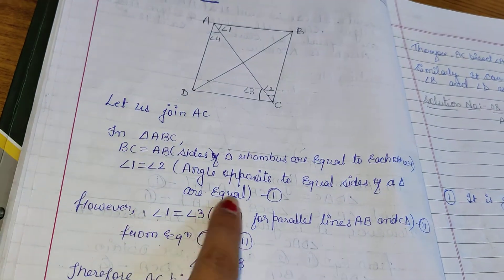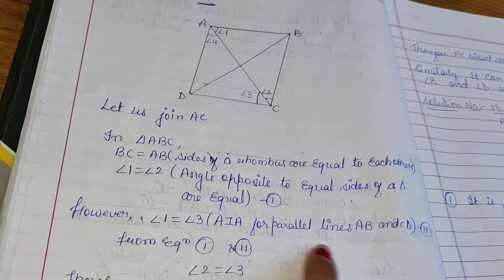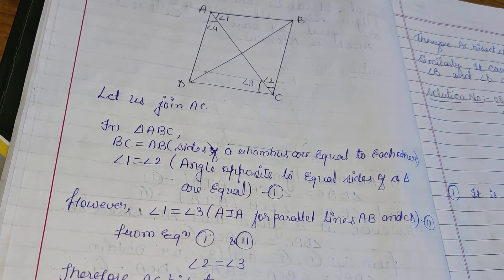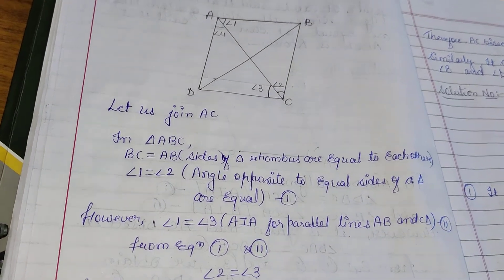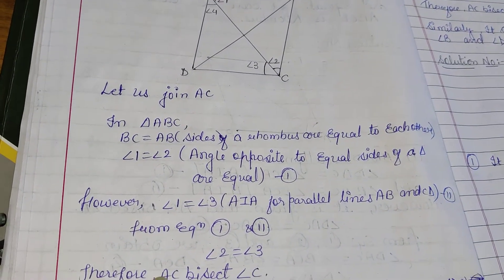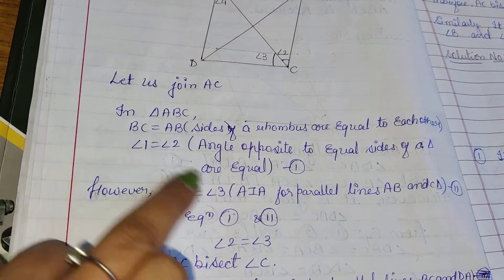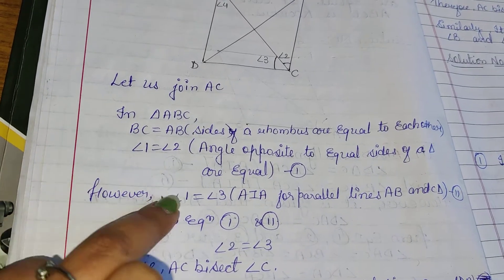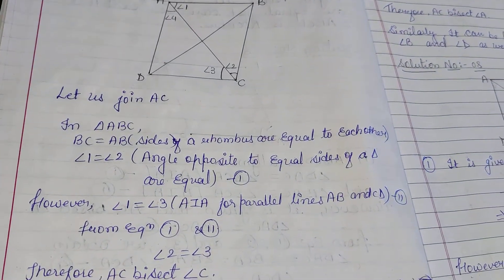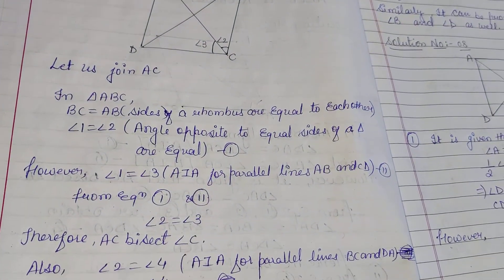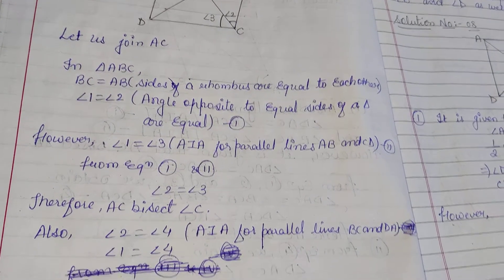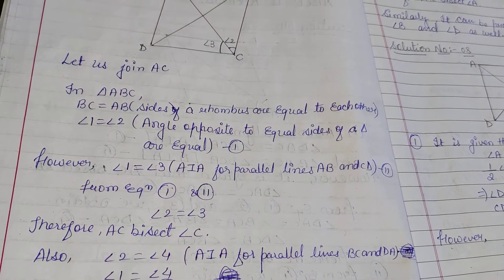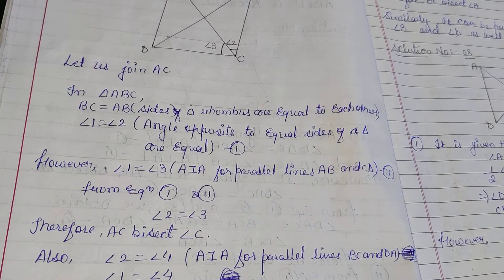These are alternate interior angles. Which lines are parallel? AB and CD. That gives us equation 2. So from equation 1 and equation 2, we can write that angle 2 is equal to angle 3, since both equations have the same LHS. We can equate the RHS parts as well. Therefore, AC bisects angle C.